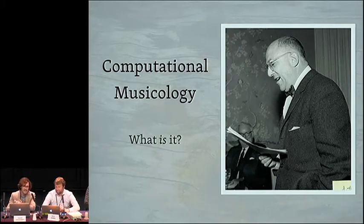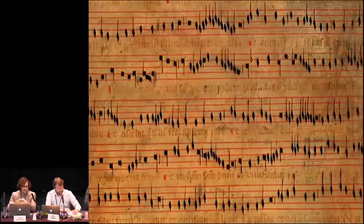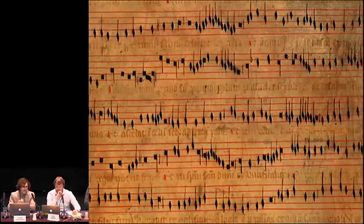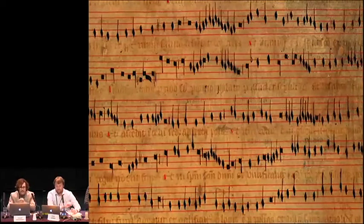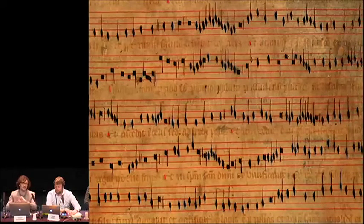Nowadays, computational musicology is not based on punch cards, but on four primary types of data. The first would be musical scores, old and new. Sometimes they come to us in the form of a digital image, and you have to go through a process called optical music recognition — the analog to optical character recognition — moving from the image to some kind of digital representation that includes the different musical symbols on the page. You can do that for older musical notations as well as the common music notation classical musicians are more familiar with today.